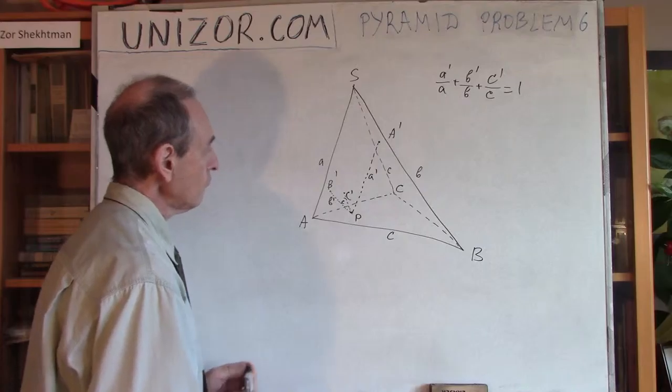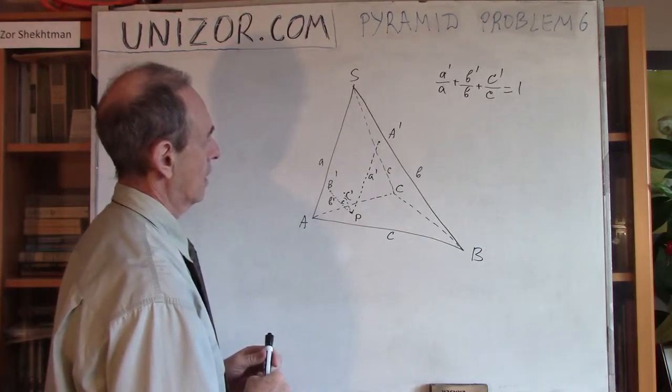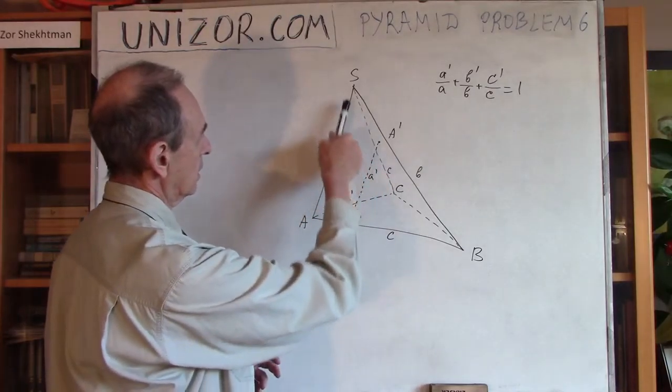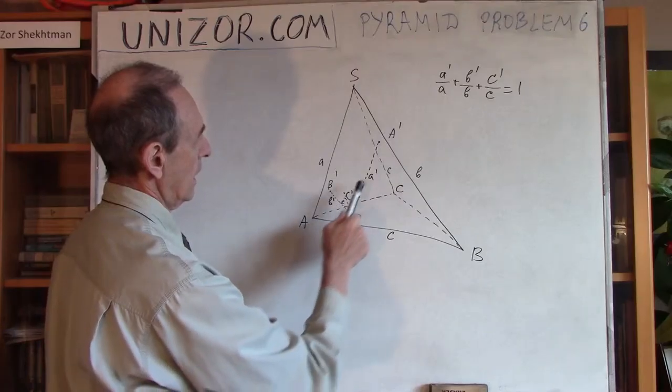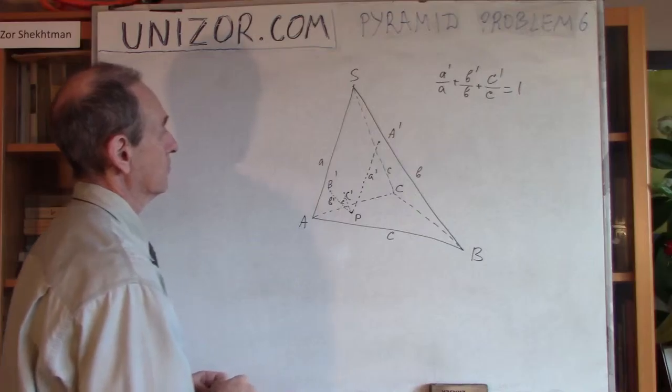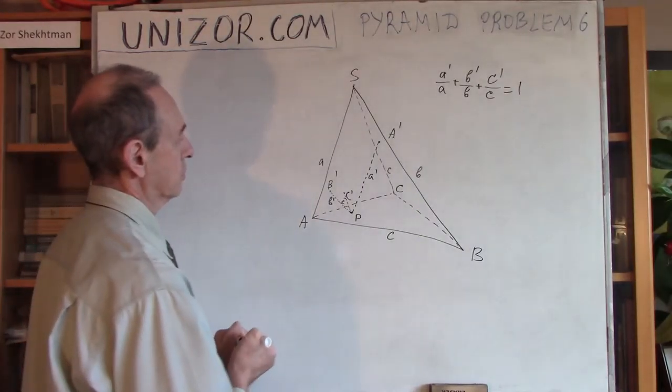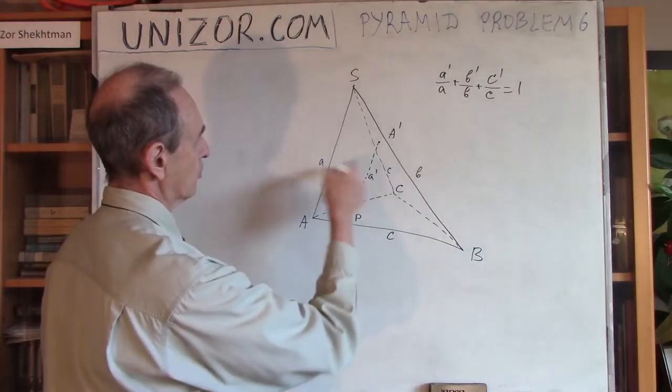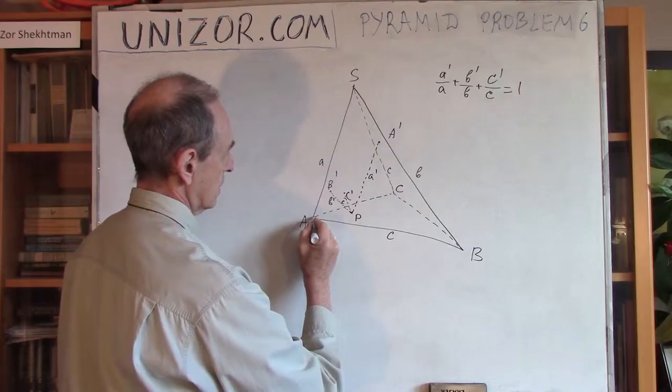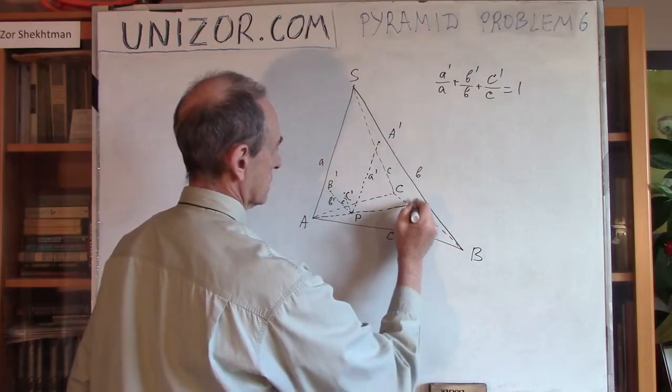So, whatever point you choose. How can we prove that? Here is what I suggest. SA and PA prime are parallel lines by construction. So, I can draw a plane through these two parallel lines, which would cut my ABC along this line. Let's call it A1.